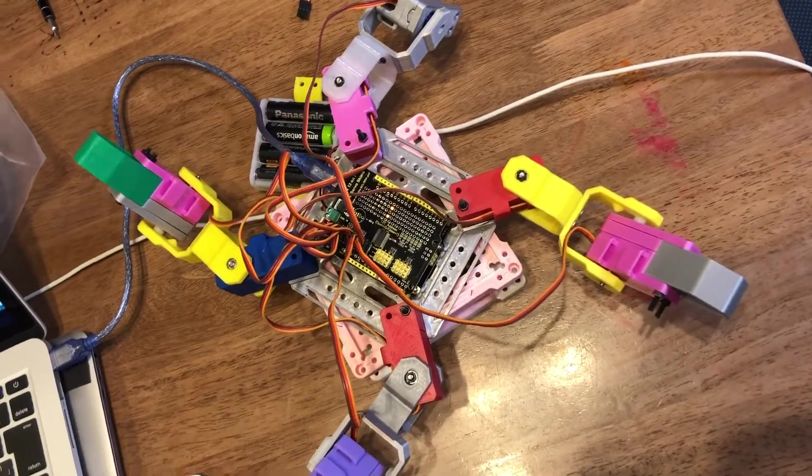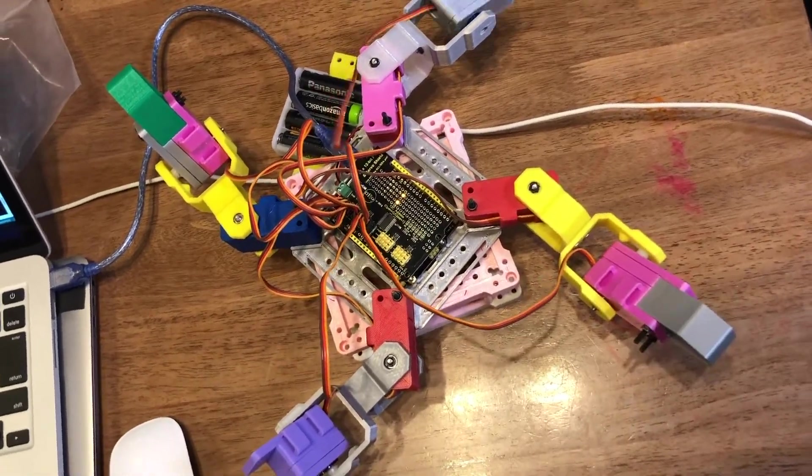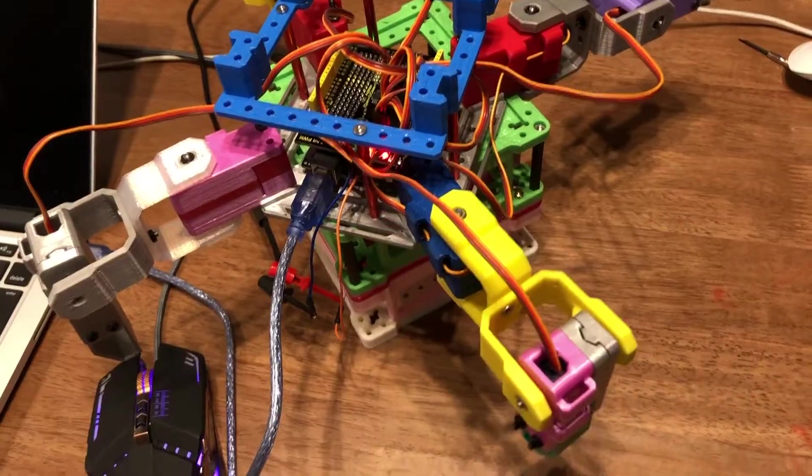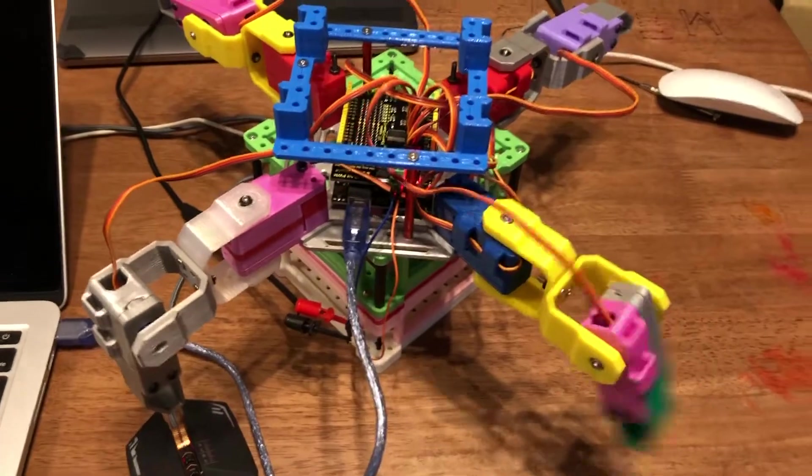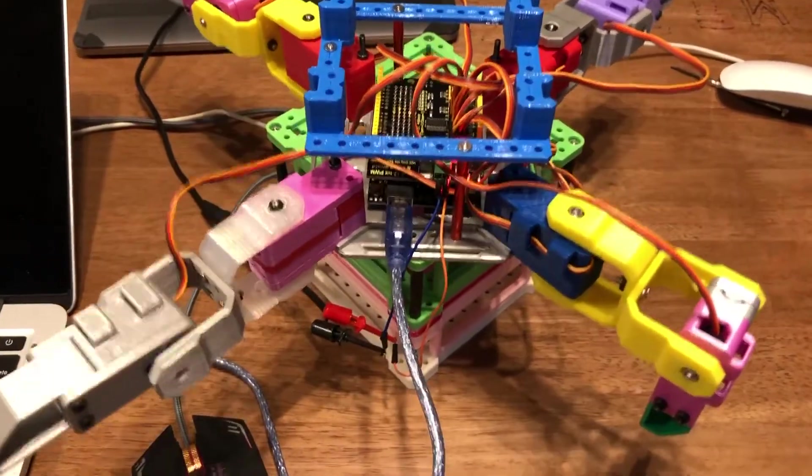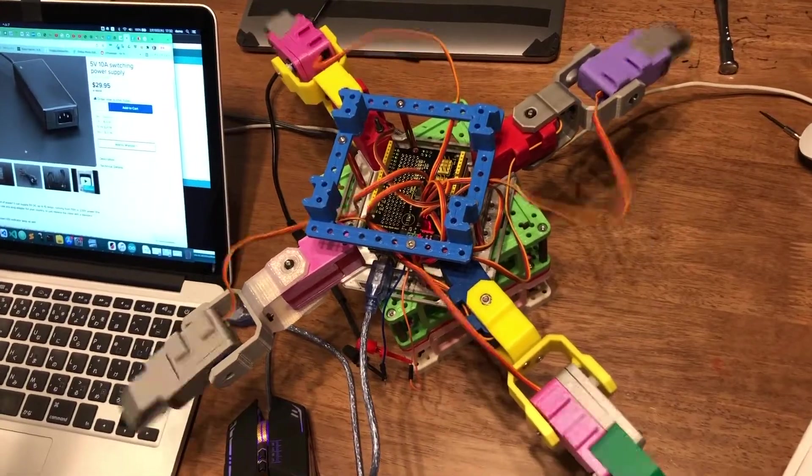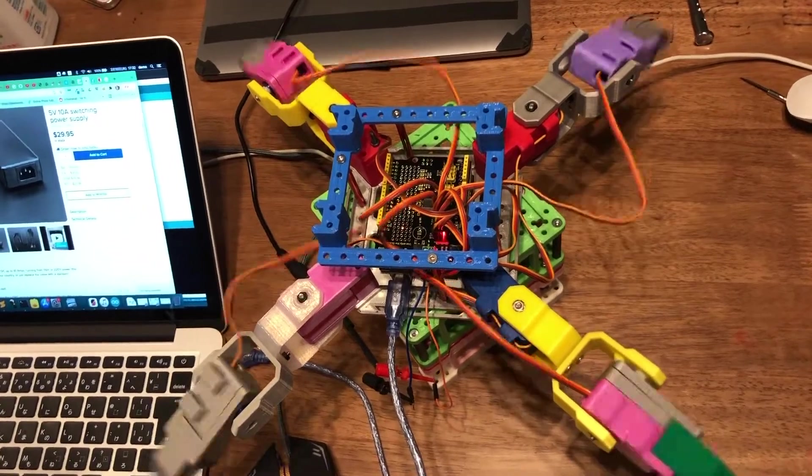So I printed four of them to make the prototype. But unfortunately, as you can see, when there is a support underneath, the standing movement of the legs is good. But when I put the robot on a flat surface, it doesn't have enough power to stand.